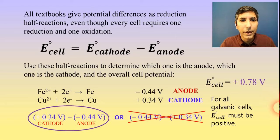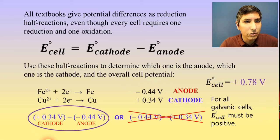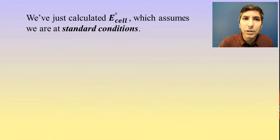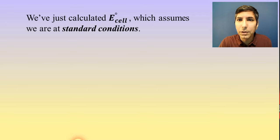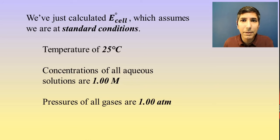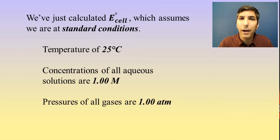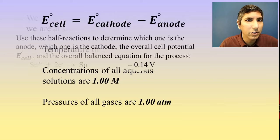That's how we can determine which one's going to be the anode and which one's going to be the cathode based on the half-reaction cell potentials. We just calculated E-cell — the overall potential difference, or the voltage — for this galvanic cell. Notice there is a little degree sign here. That degree sign implies that we are at standard conditions, meaning the galvanic cell is operating at 25 degrees Celsius, all solutions are at one mole per liter, and any gases present would be at one atmosphere. Later on, we'll talk about how that may not always be the case.